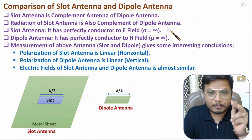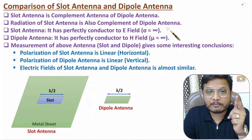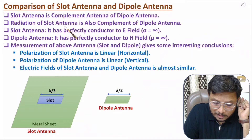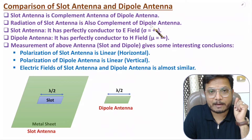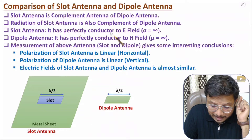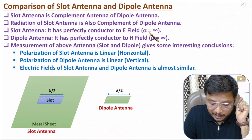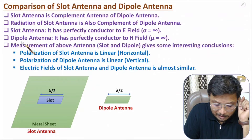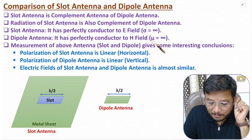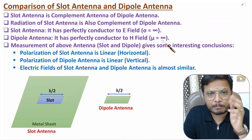Radiation of slot antenna is also the complement of dipole antenna. If a dipole antenna has vertical polarization, then slot antenna will have horizontal polarization. Slot antenna is a perfect conductor with respect to electric field, meaning conductivity is infinite, while dipole is a perfect conductor with respect to magnetic field, meaning permeability is infinite — because dipole and slot are complements of each other.